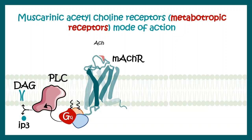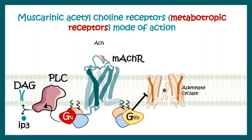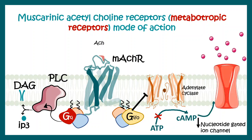Alternatively, the muscarinic acetylcholine receptor can trigger Gi or Go type G proteins. The Gi protein inhibits adenylate cyclase, and that leads to depletion of cyclic AMP levels — meaning ATP cannot be converted to cyclic AMP. This decreasing cyclic AMP level regulates the activity of nucleotide-gated ion channels and thereby modulates neuronal activity.